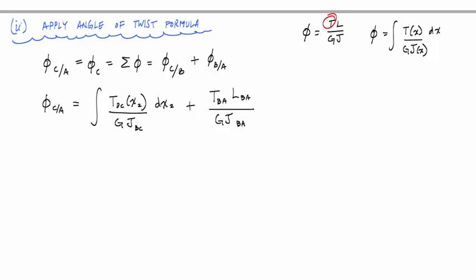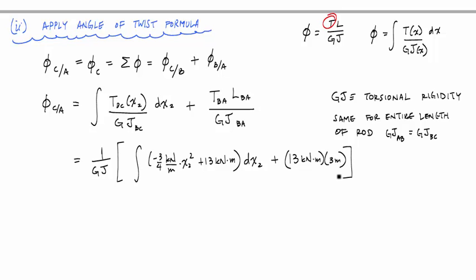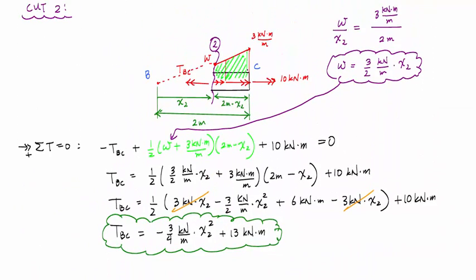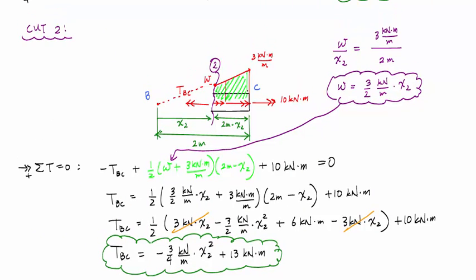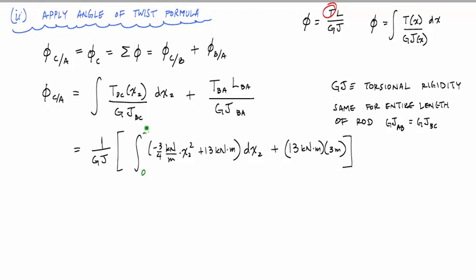If I substitute my definitions of the internal torques, I can factor out the GJ — also called the torsional rigidity — since it's constant for the entire length. One thing that tends to confuse people is the bounds of the integral. A good rule of thumb is that it goes from discontinuity to discontinuity for that segment. Since I defined my origin at point B, x2 ranges from 0 to 2 meters. So the range for my integral is from 0 to 2 meters.